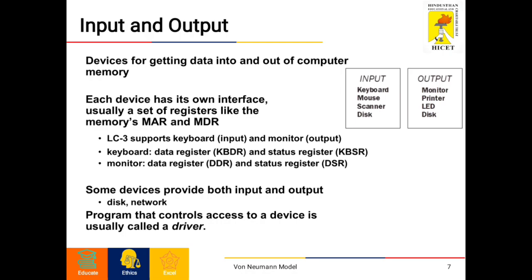For input and output: programs or data are read into main memory from an input device or secondary storage under the control of CPU input instructions. Output devices are used to output information from a computer. If results are evaluated and stored in the computer, output devices present them to the user. Examples of input devices are keyboard, mouse, scanner, and disk. Examples of output devices are monitor, printer, LED, and disk. Some devices provide both input and output, such as disk and network. A program that controls access to a device is usually called a driver.